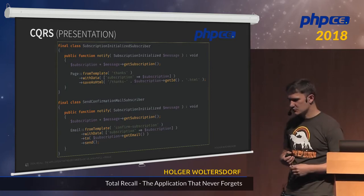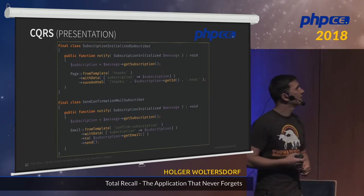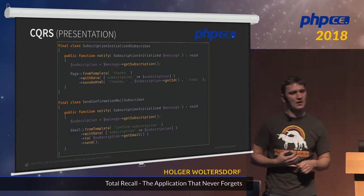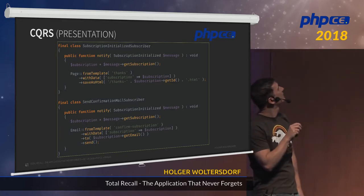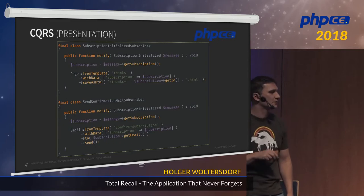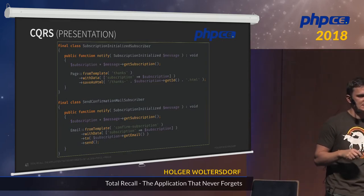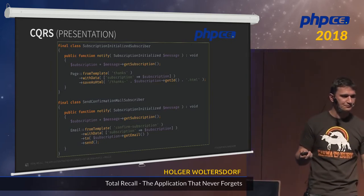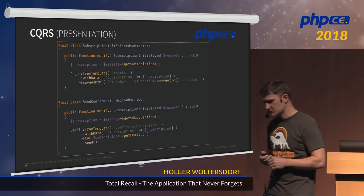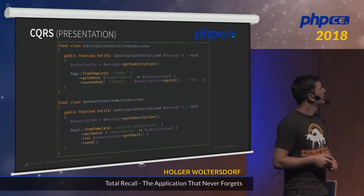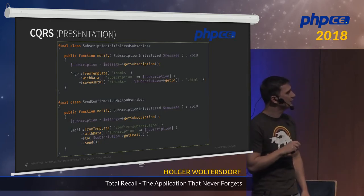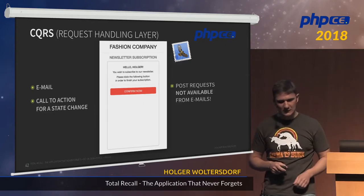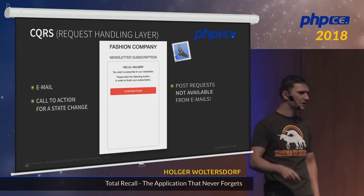We have two subscribers to our message. The first subscriber just creates the static HTML thank you page we saw before — we render a template with some data, the subscription itself, and store it under a unique path, which is the target of the redirect. The second subscriber sends out the email to the subscriber — basically the same, creating an email from a template.